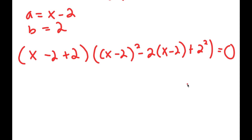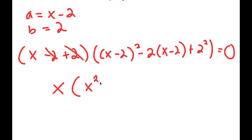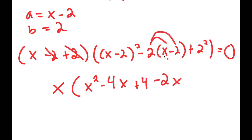Now we can simplify this. Negative 2 and positive 2 cancel out, so I get x times x minus 2 squared, which is the same thing as x squared minus 4x plus 4. Then negative 2 times x minus 2 — I can distribute the negative 2: negative 2 times x is negative 2x, and negative 2 times negative 2 is positive 4. And finally I have plus 2 squared, which is equal to 4.